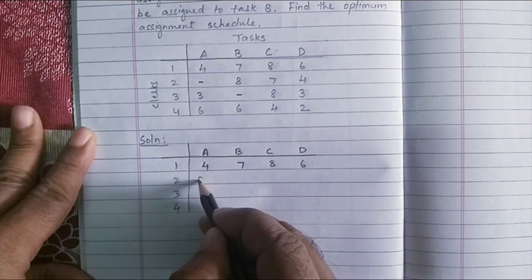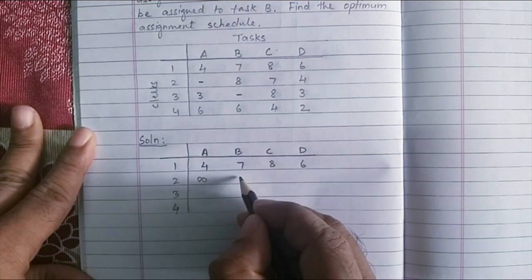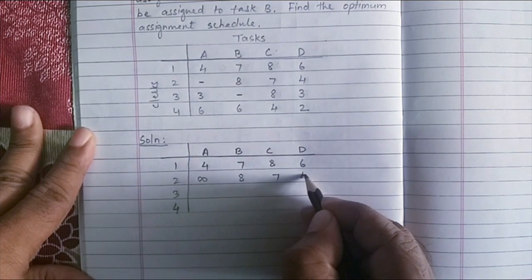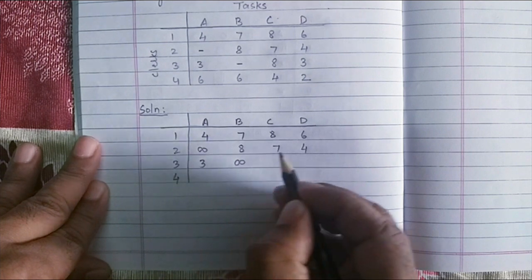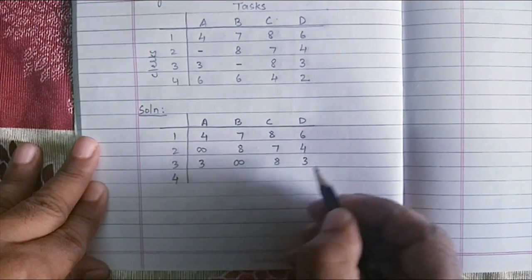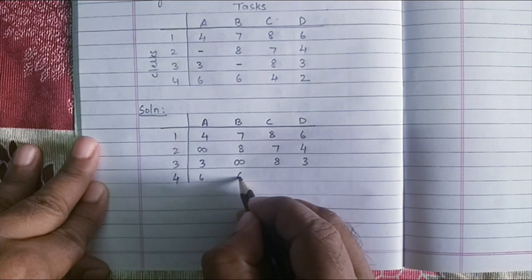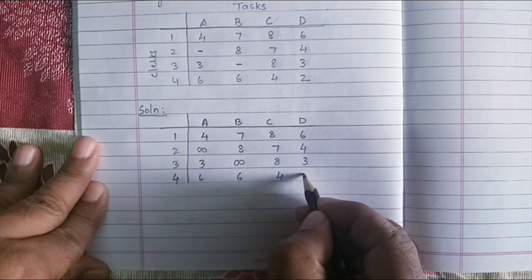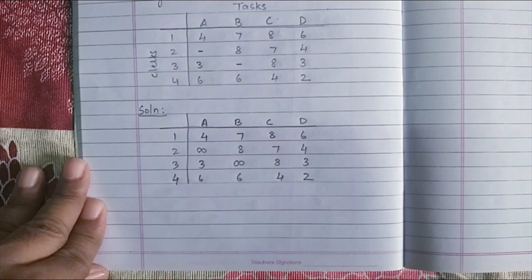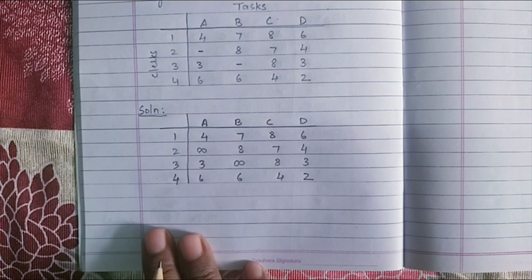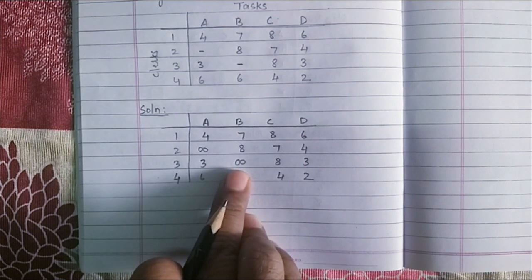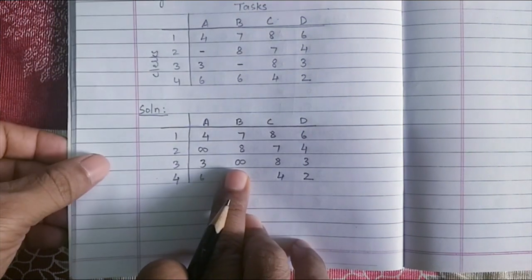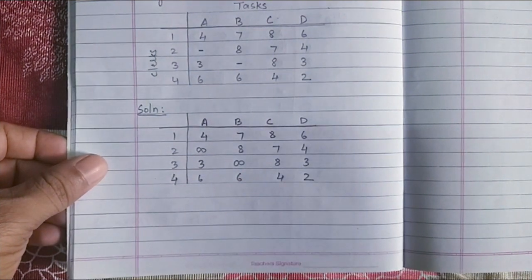We will write down the values. Clark 2 cannot be assigned to A. So I am going to put an infinity. Eight, seven, four, three, again infinity. Eight, three, six, six, four, and two. So this is my new matrix where I have put infinity in the position where the assignment is prohibited.